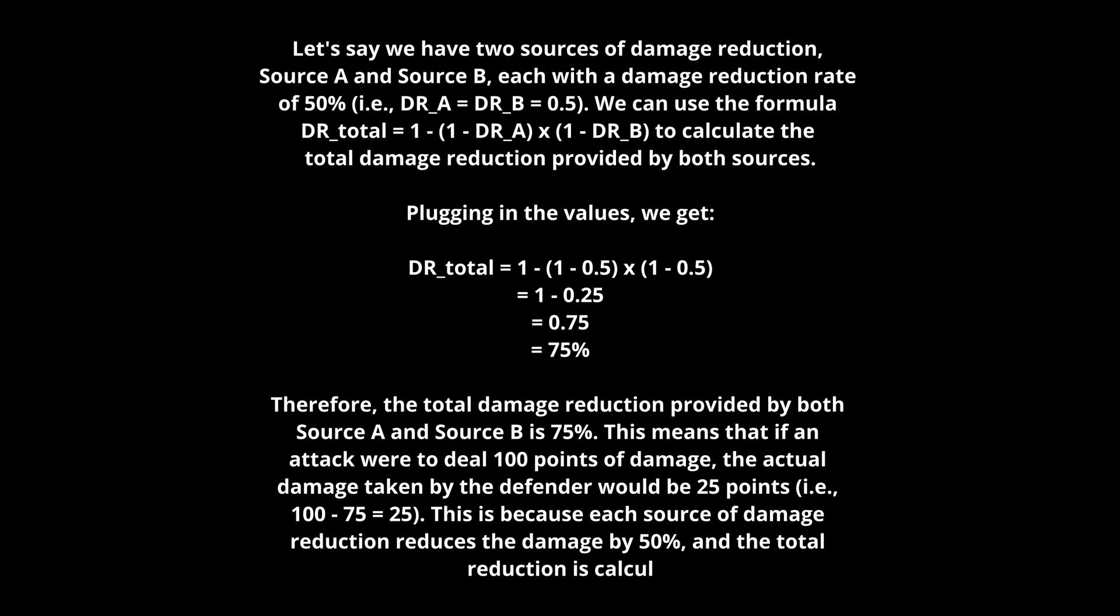We can use the formula to calculate the total damage reduction provided by both sources. You can see: 1 - (1 - 0.5) × (1 - 0.5). The result is 0.75, which is 75%. So if you have two sources at 50% each, you won't get to 100%—it's multiplication, not additive. There's an example showing if you get an attack, how much damage you'll take at the end.